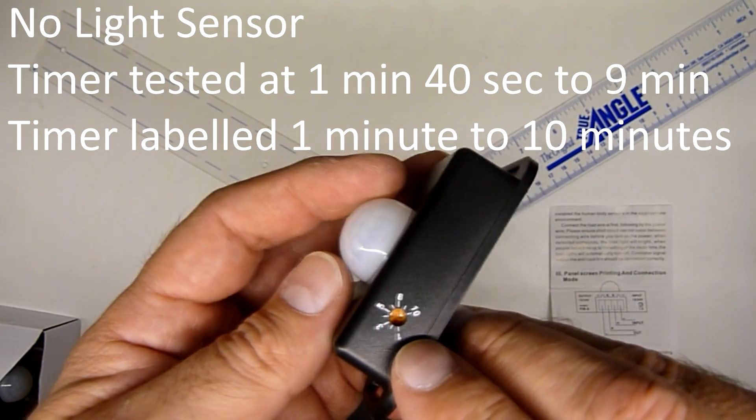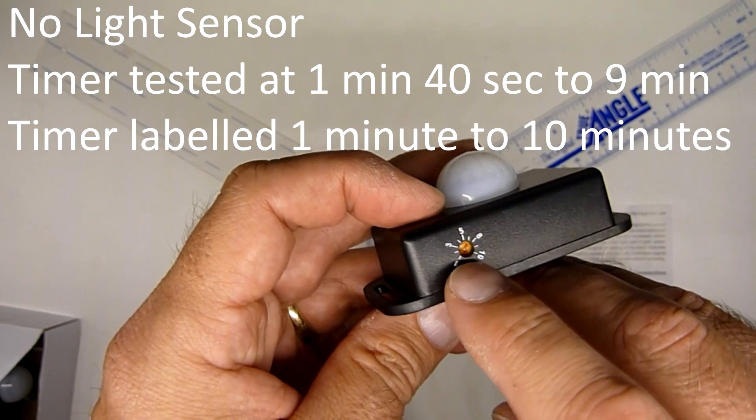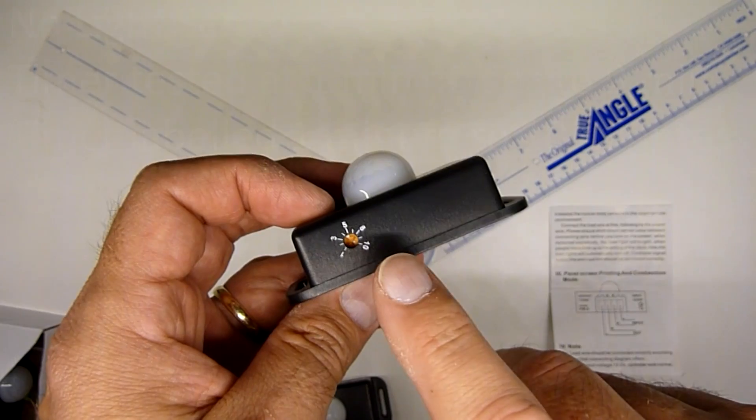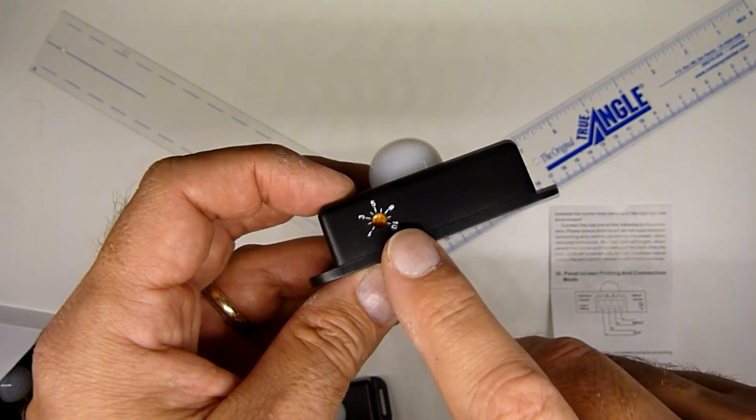It does have a time adjustment on the outside here, labeled 1 minute to 10 minutes. My testing at 12 volts DC, the shortest I've been able to do is a minute and 40 seconds, and the longest it goes is just over 9 minutes. It's been fairly consistent in doing that.